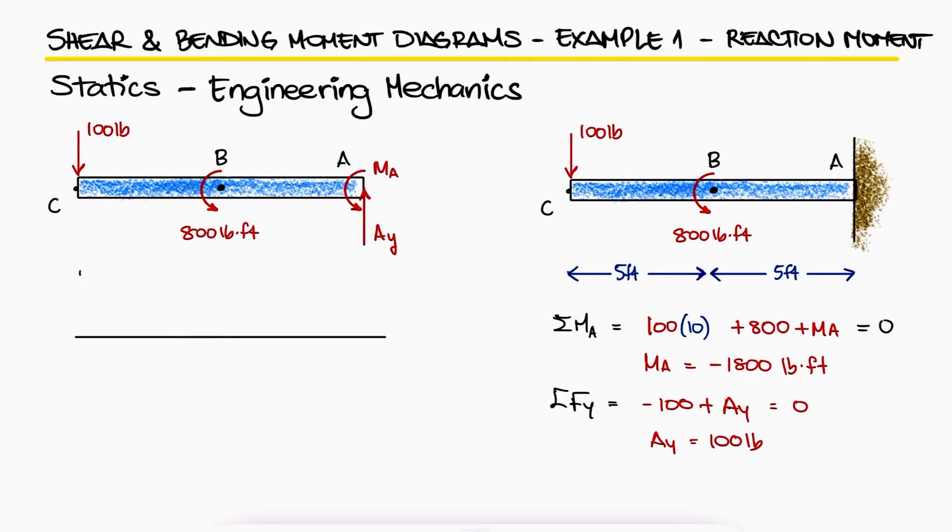The shear diagram with an x-axis in feet and a y-axis in pounds would go down by 100 at C, remain the same till A, and go up by AY at A.